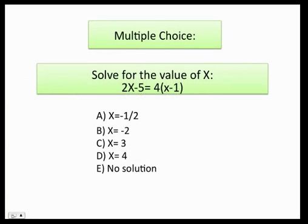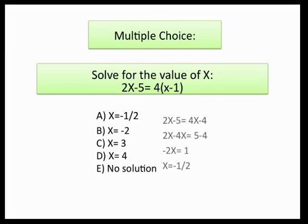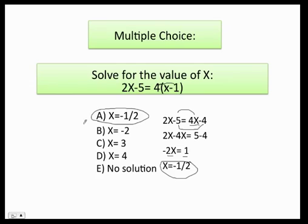Let's do one multiple choice example. Solve for the value of x — here you will only have one result. I have 2x minus 5 equals 4 times the quantity x minus 1. First I distribute: 4 times x and 4 times 1, giving me 2x minus 5 equals 4x minus 4. Then I put all the x's together — the x moves to the other side negative, and the 5 goes to the other side positive, giving me 2x minus 4x equals 5 minus 4. So negative 2x equals 1, and finally x equals negative one half. You go ahead and choose answer A.